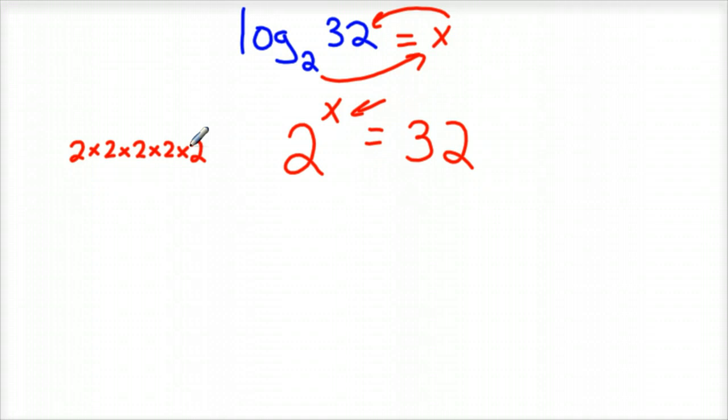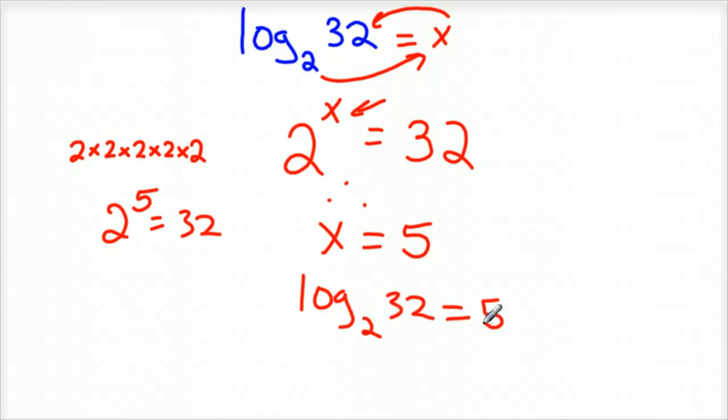We've got 1, 2, 3, 4, 5 of them. So 2 to the 5th power is indeed 32. Therefore, X is 5, or log base 2 of 32 equals 5.